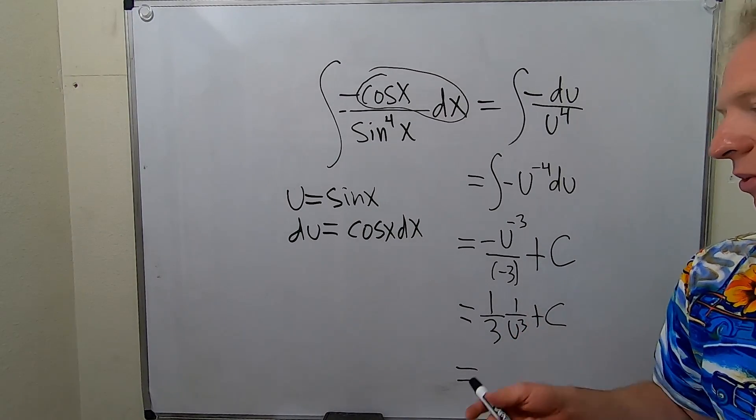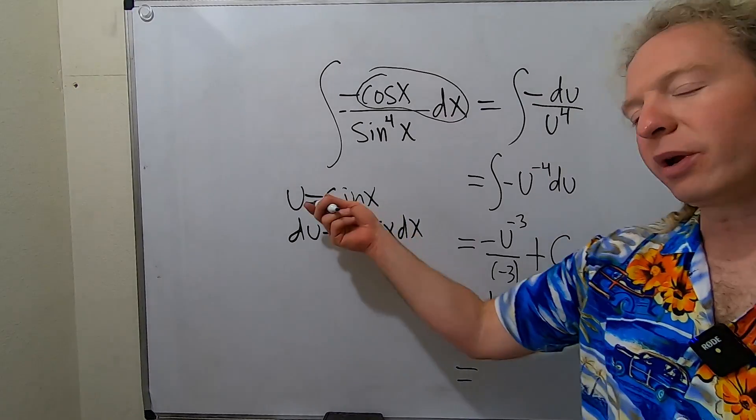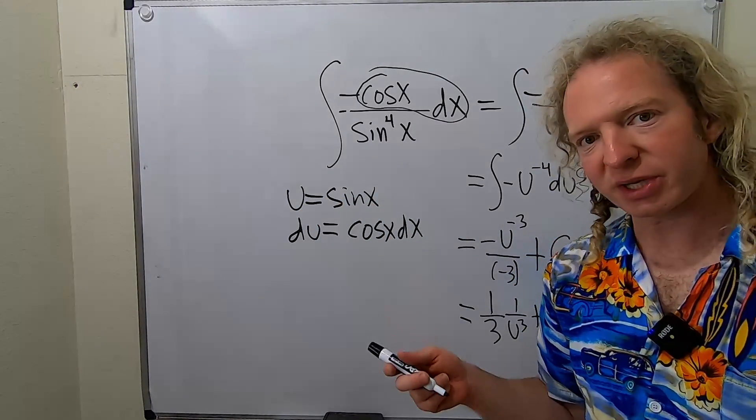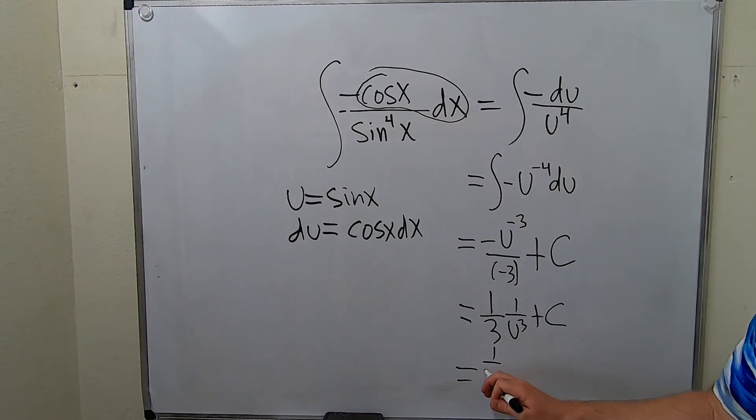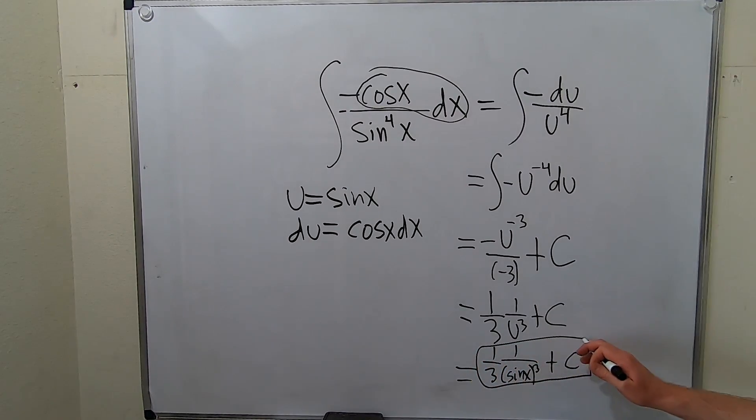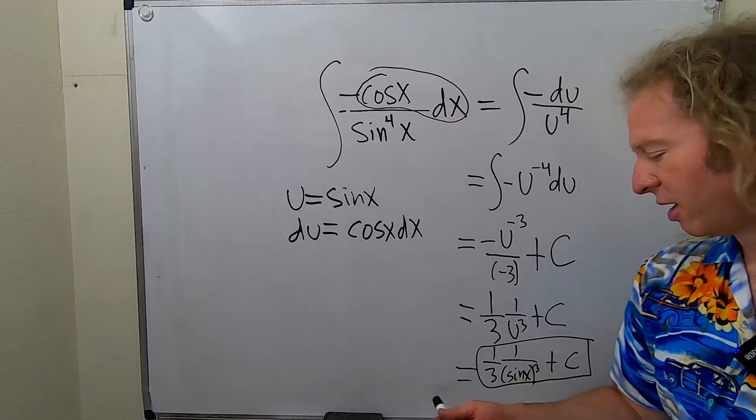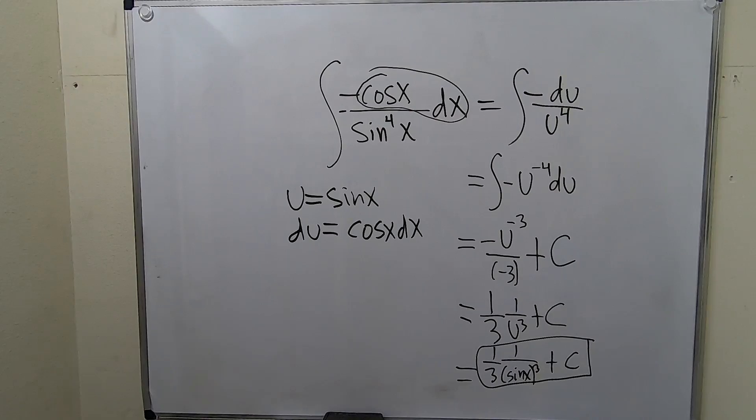The last thing to do is replace the u with what it actually is. So u is equal to sine x. So this is one third one over sine x quantity cubed, and you can use shorthand notation plus C. You can even write it as cosecant because one over sine is cosecant, but let's just leave it like that.